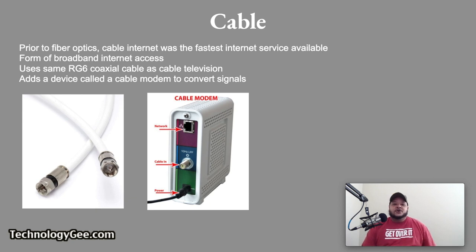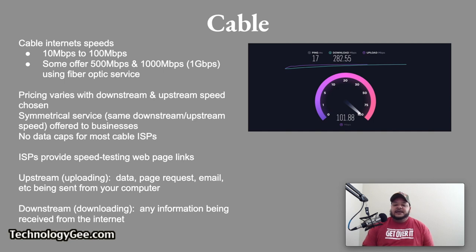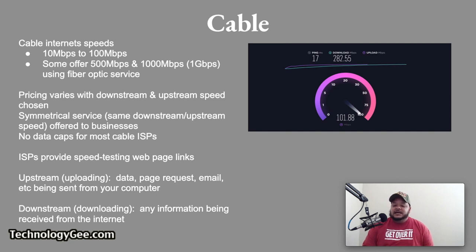Here's a picture of the RG6 coaxial cable — most of you have seen this or currently have one in your house behind a cable modem. Typical cable internet speeds range from 10 megabits per second up to 100 megabits per second, but some operators now offer 500 megabits per second and 1000 megabits per second, which is one gigabit per second, by using fiber optic service. Cable internet pricing varies with the downstream and upstream speeds chosen. Symmetrical service — the same downstream and upstream speed — is typically only offered to business customers. Most cable ISPs do not have data caps.